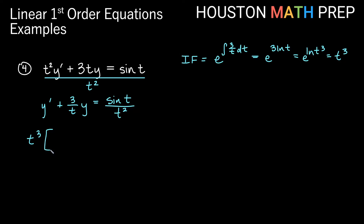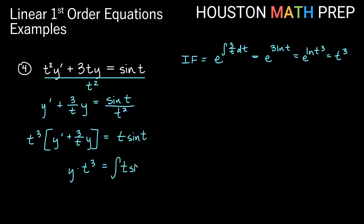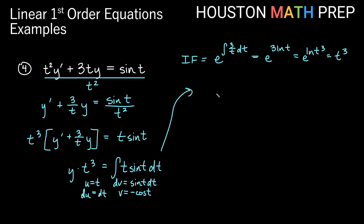We multiply both sides by t cubed. On the left side I won't distribute — it's a product rule. On the right side, t cubed times sine of t over t squared gives t sine t, which is easier to work with. Integrating both sides with respect to t: the left side gives y times t cubed. The right side requires integrating t times sine of t dt by parts. Let u equal t and dv equal sine of t dt, so du equals dt and v equals negative cosine of t.